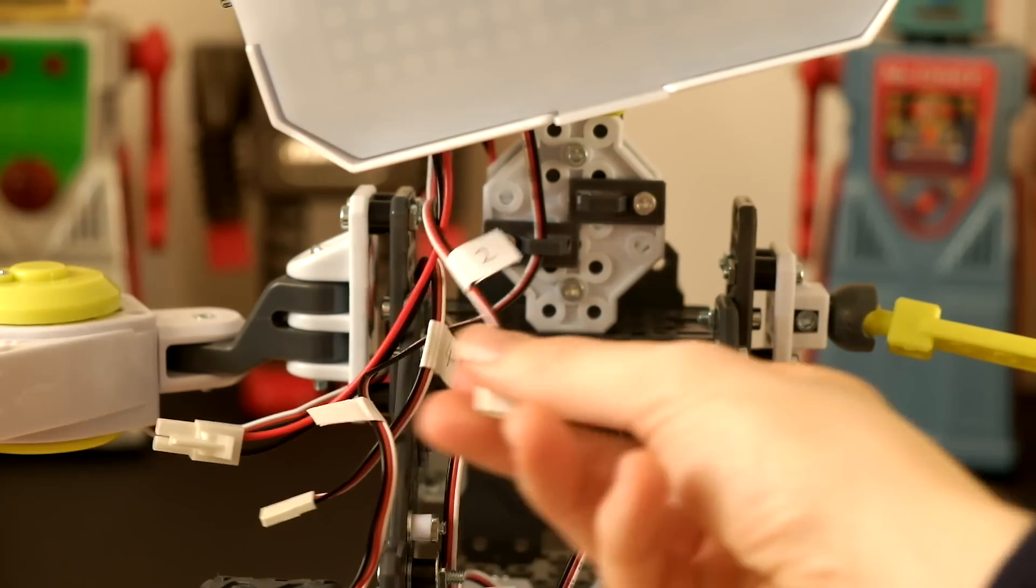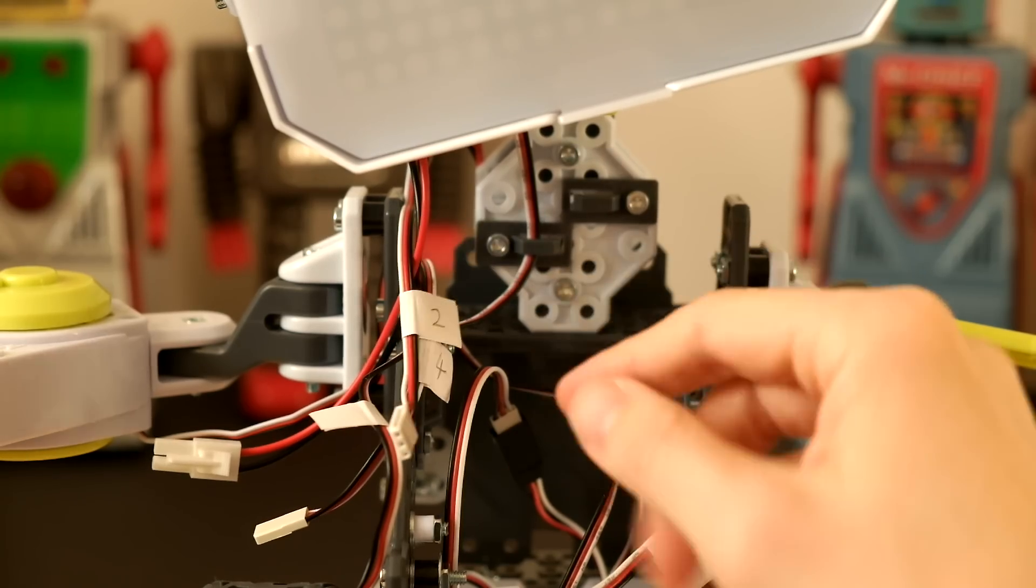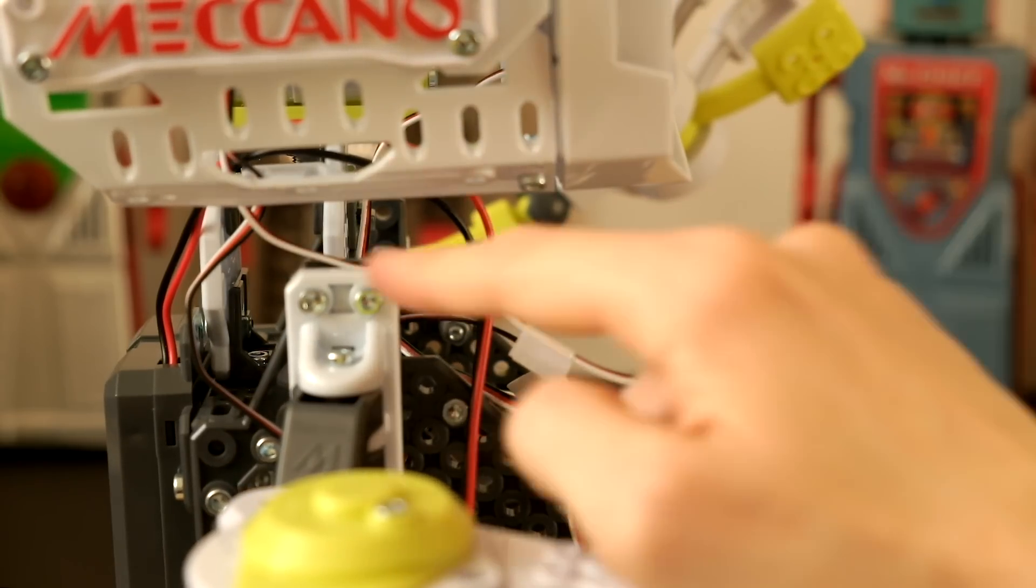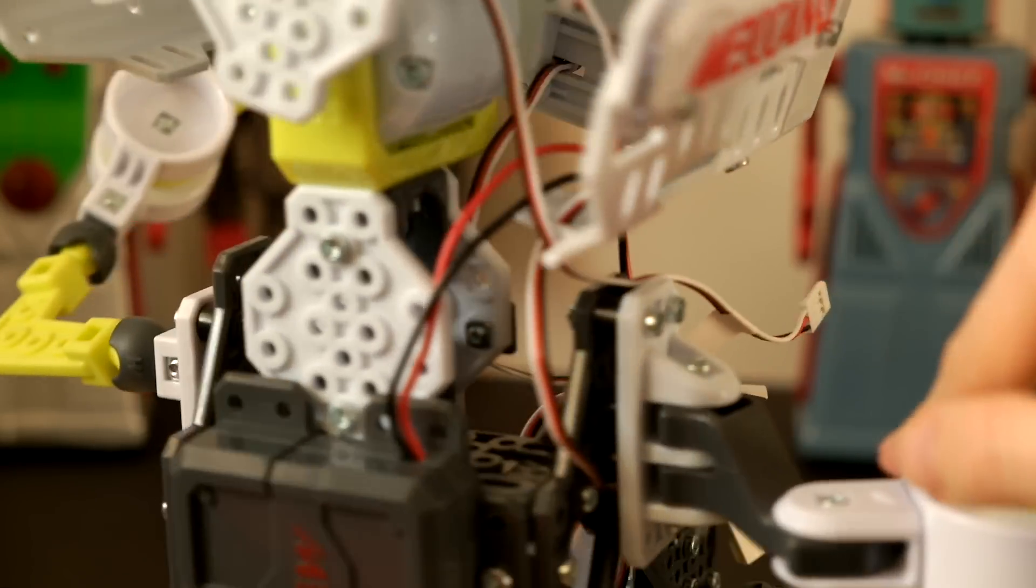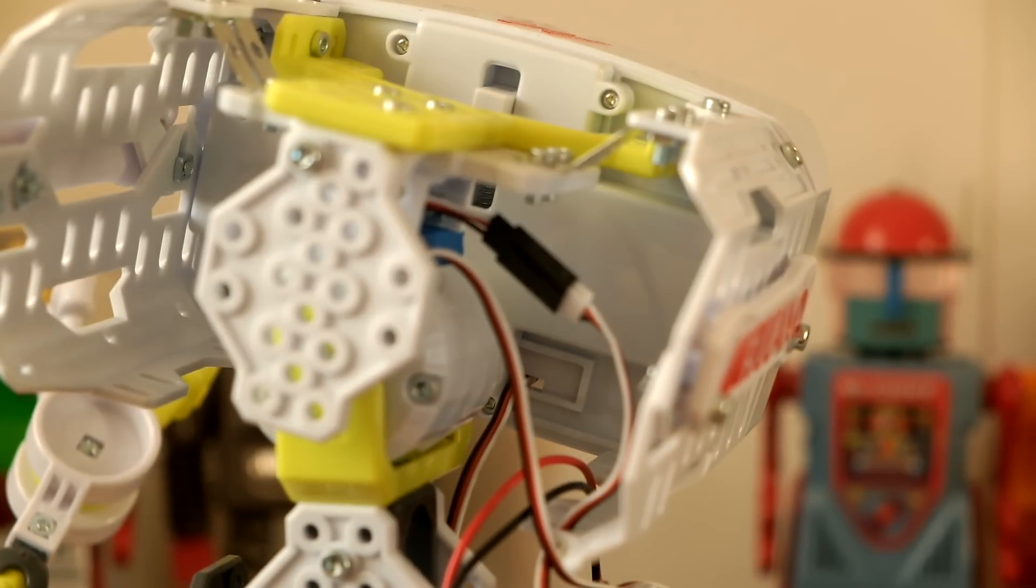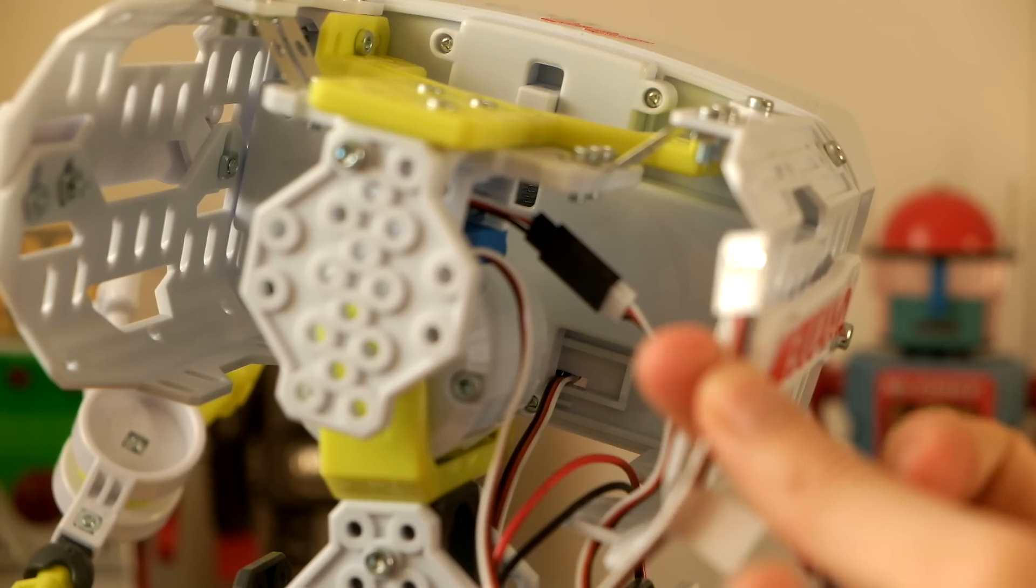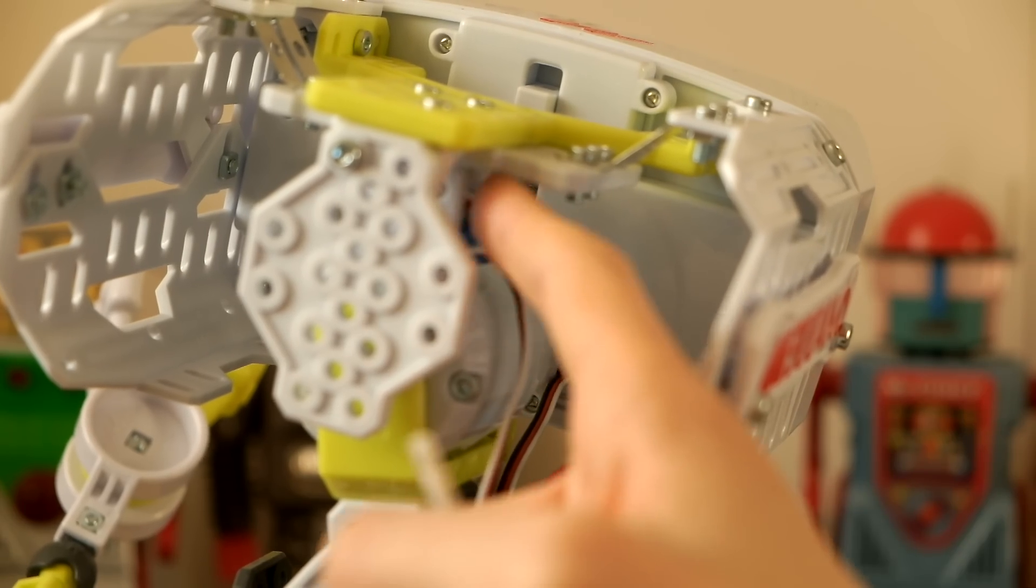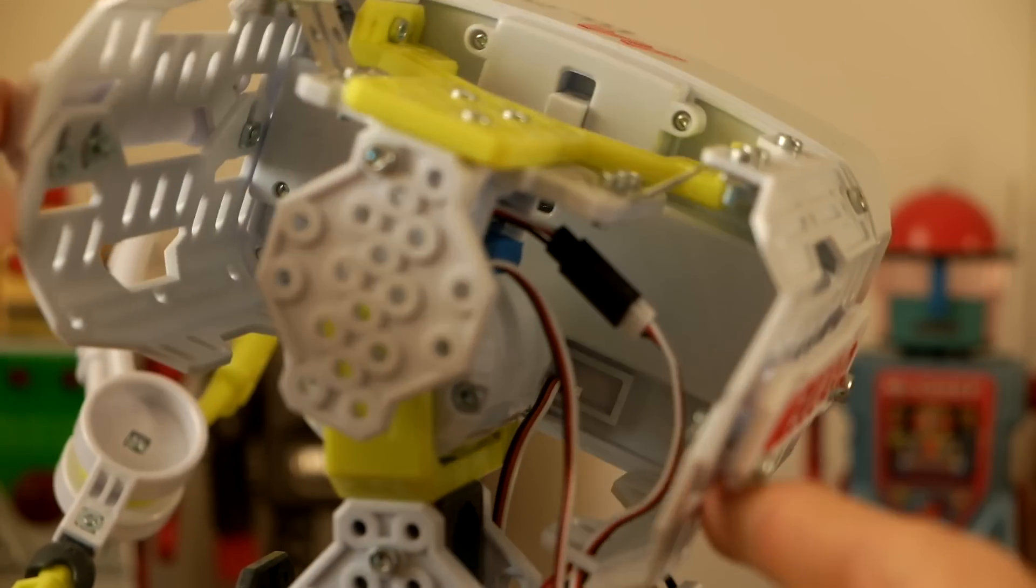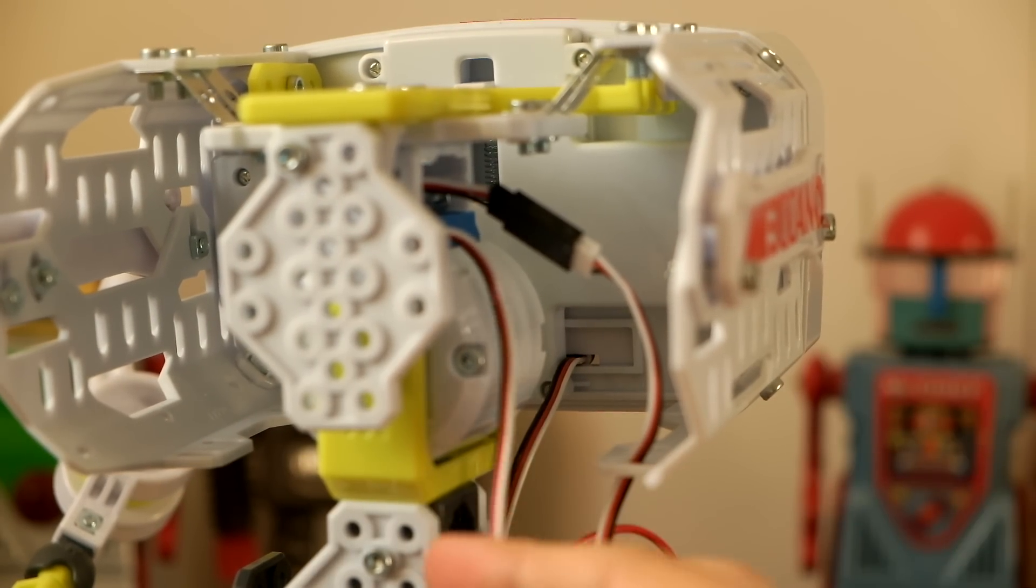Okay, so the wire labeled number two - you see that? That comes down like that. It just simply comes down. It's the wire with the white connector coming out of the neck motor. The neck motor is what I call the one that makes Max's head. So that's number two.